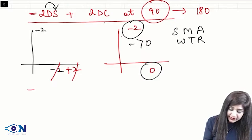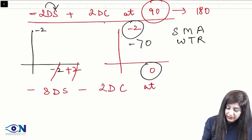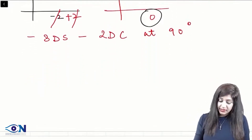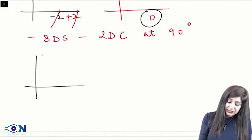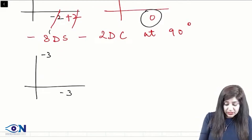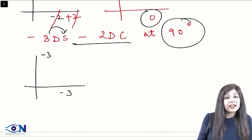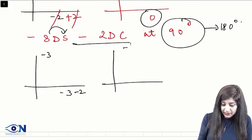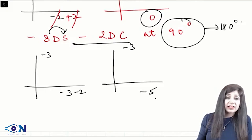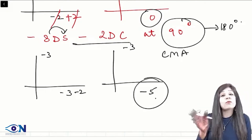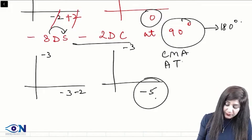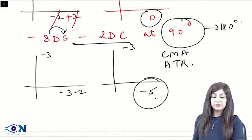Third example: minus 3 diopter spherical and minus 2 diopter cylinder at 90 degrees. Spherical gives minus 3 in both meridians. Cylinder at 90 degrees acts at 180 degrees, adding minus 2 at horizontal. This gives minus 3 at vertical and minus 5 at horizontal. Both minus means compound myopic. Minus 5 is more than minus 3, and horizontal is more than vertical — therefore this is against-the-rule astigmatism.